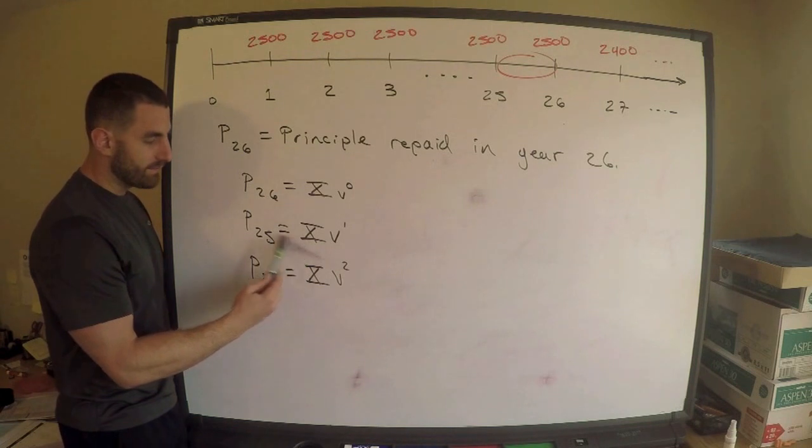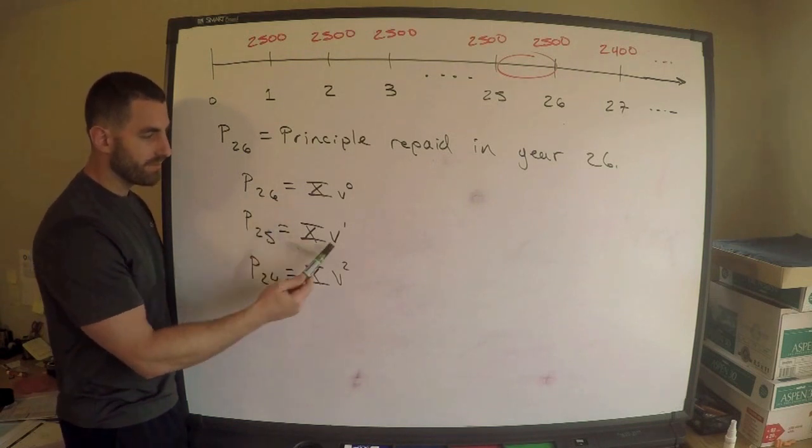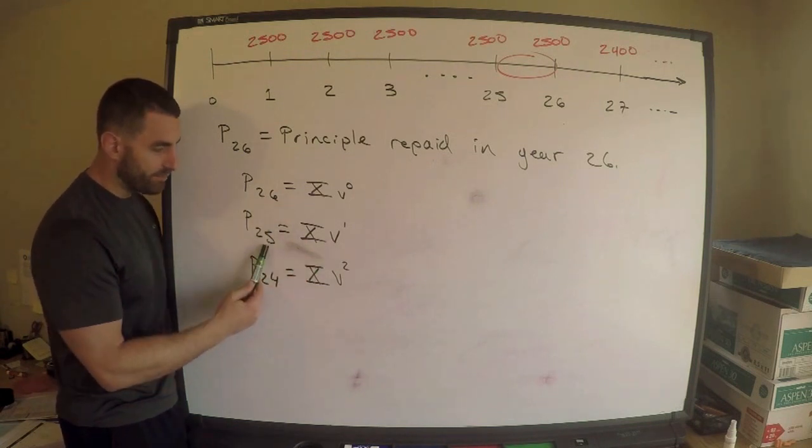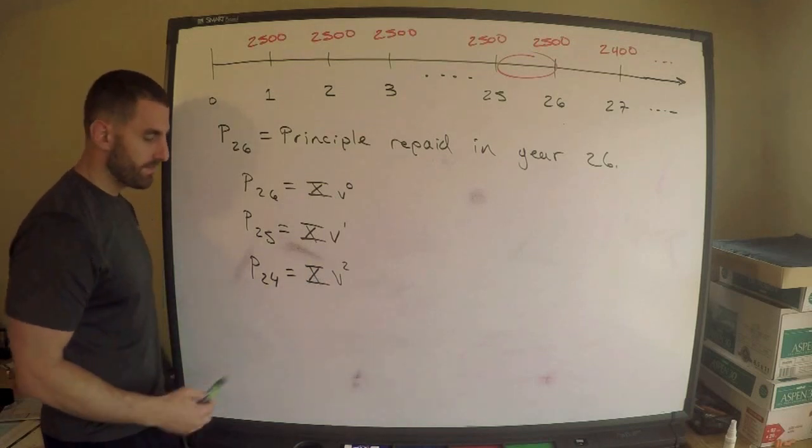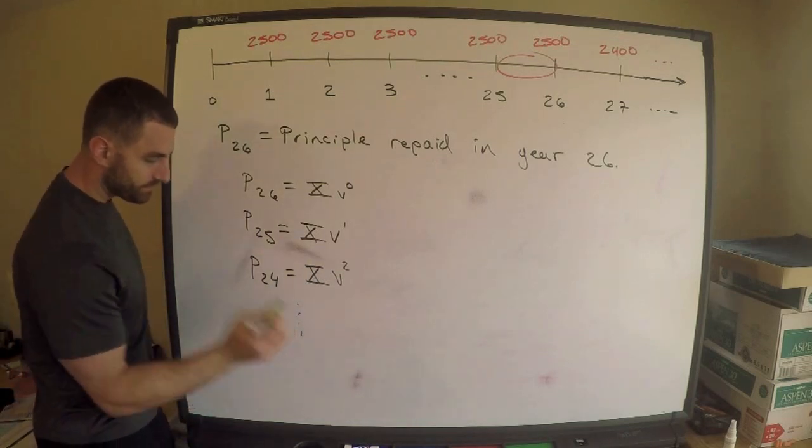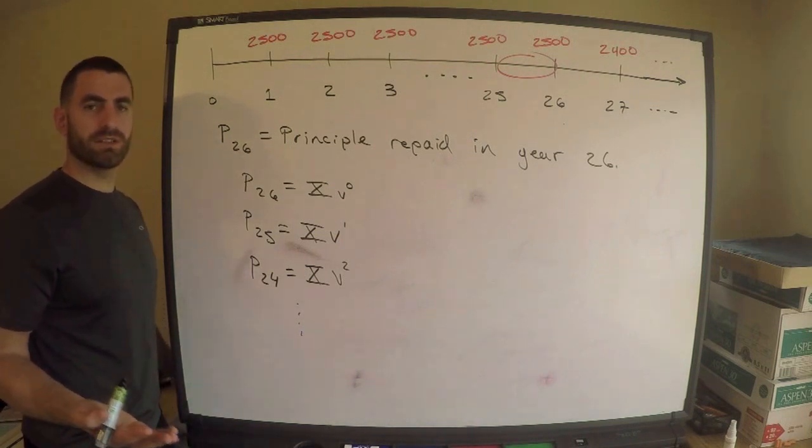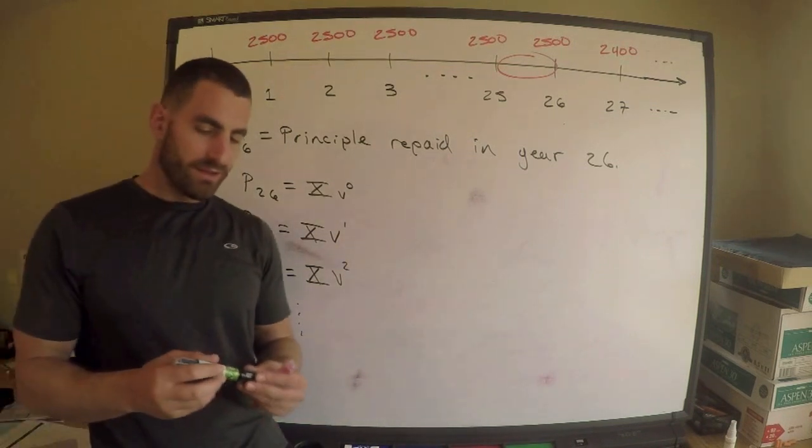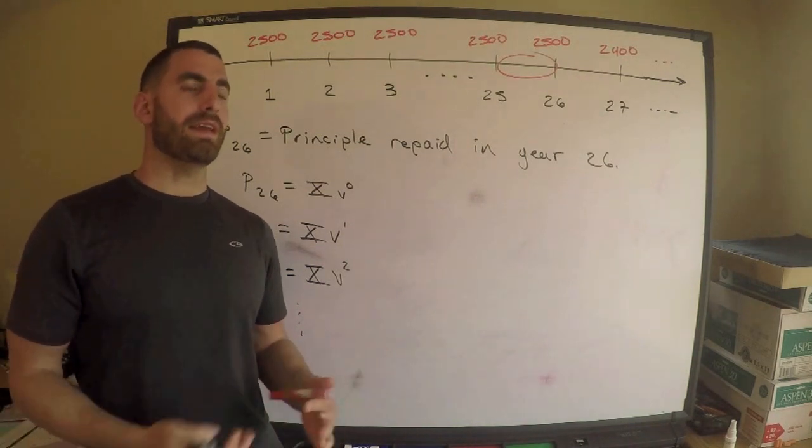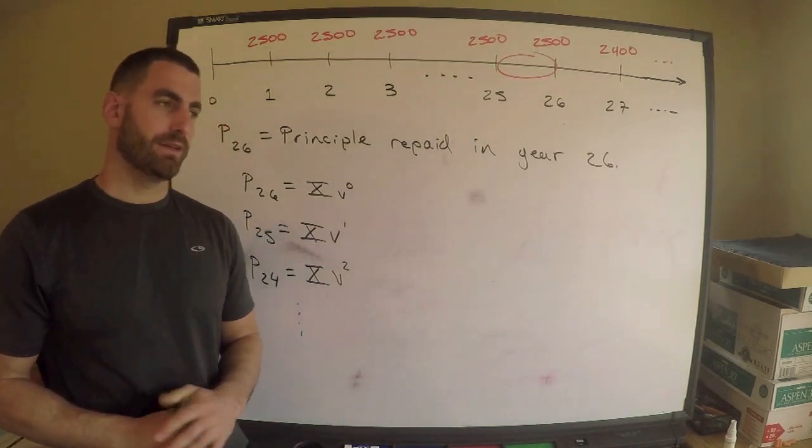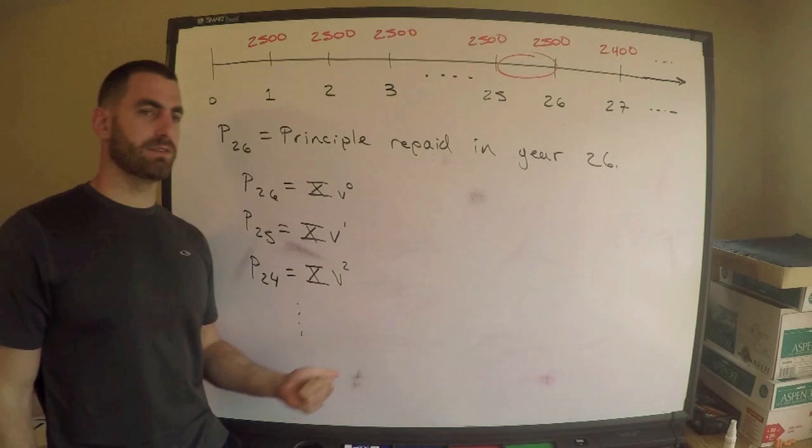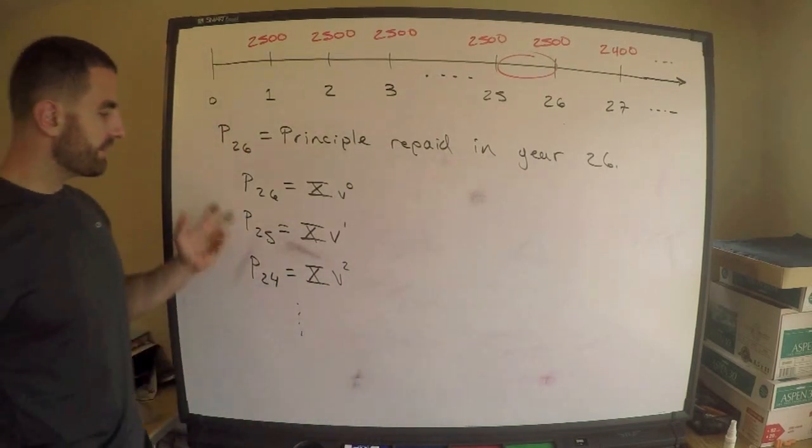So if I keep going, and hopefully I can see a pattern, let me just write this down in general actually, and this was helpful in some questions. Because they can sometimes ask you what's the total, say, interest paid, and we have just more manipulation that's related to this. Let me write down this in general.